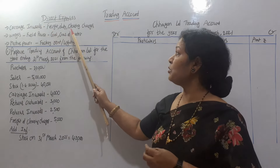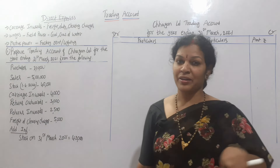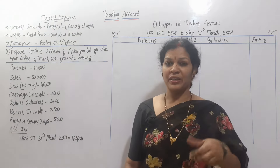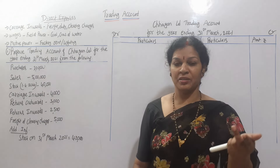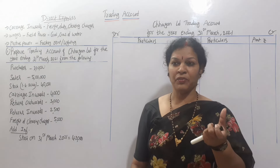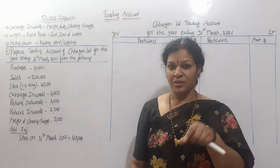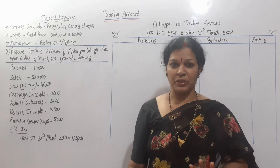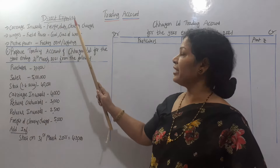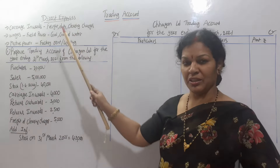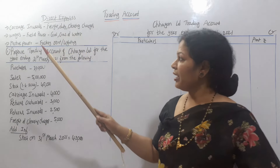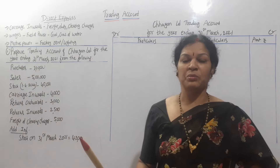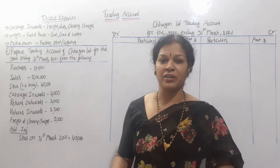Freight, duty, and clearing charges — these are related to the factory. Freight is a type of tax at the manufacturing level. Freight, duty, and clearing charges are direct expenses. In the factory, we have wages — we have labor skills in the factory.